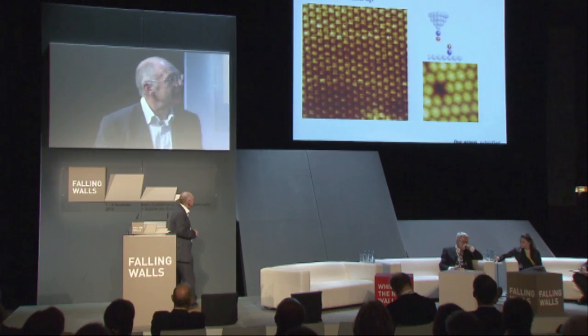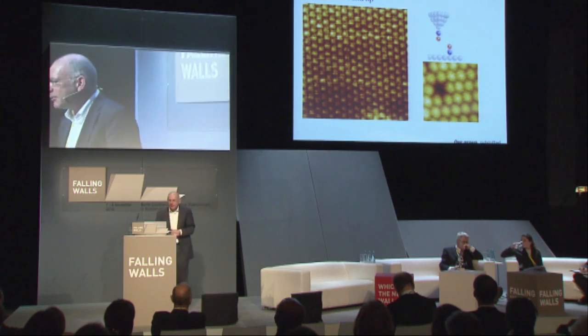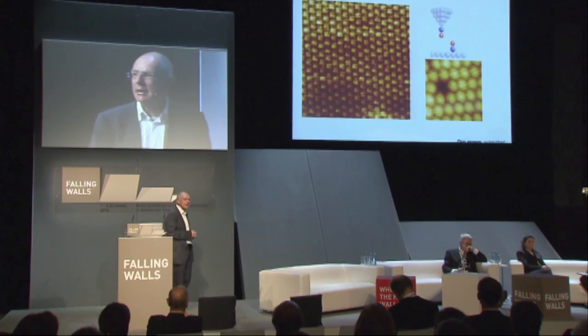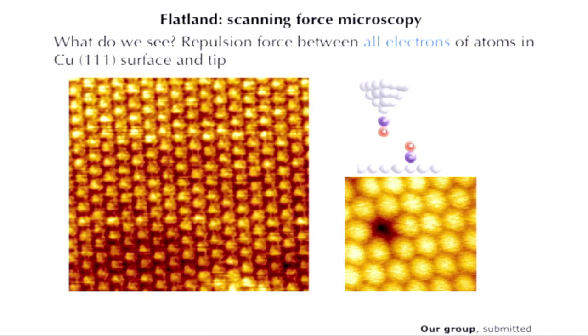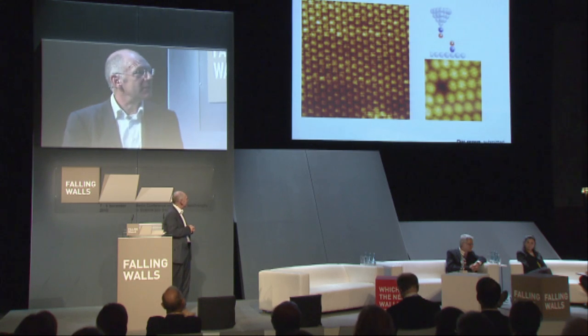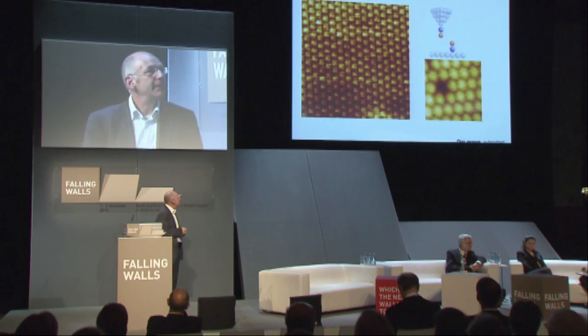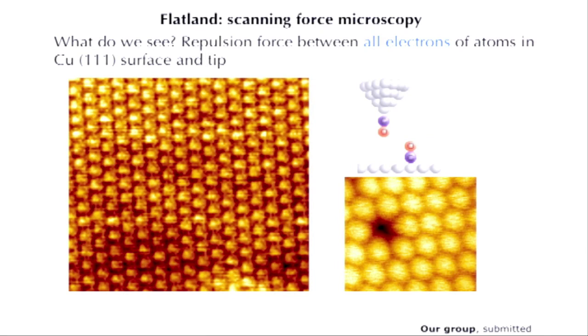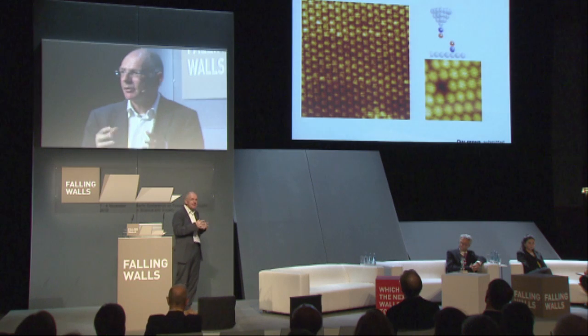Now a second example from our group — the famous copper surface. Here we use the tip not for measuring the tunneling current, but to measure the force between the last atom on the tip and the surface. We see an ordered array, and this must be the copper atoms. The difference is that we measure the force and not the tunneling current, so we use another signal. A little secret: to make the picture sharp, we have added a carbon monoxide molecule bonded to the last atom of the copper tip, because it's a much sharper and stiffer probe.